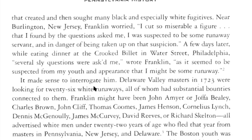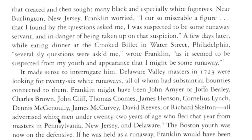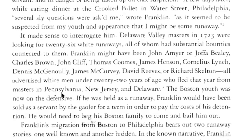It made sense to interrogate him. Delaware Valley masters in 1723 were looking for 26 white runaways — all of whom had substantial bounties connected to them. Franklin might have been John A. Meyer, Charles Brown, John Cliff, Thomas Coombs, James Henson, Cornelius Lynch, Dennis McGinley, James McCurvey, David Rees, or Richard Skelton — all advertised white men under 22 years of age who fled that year from masters in Pennsylvania.